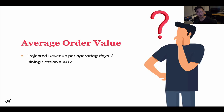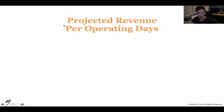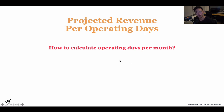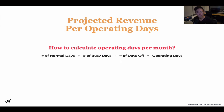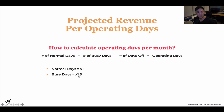To calculate projected revenue per operating day, we first need to calculate operating days per month. We know there are 30, 28, or 31 days in a month, but we must account for days we're not open and days that are super busy. For normal days, we multiply by 1. For busier days, we multiply by 1.5. For rest days, we subtract them. Operating days equals normal days plus busy days (×1.5) minus off days.